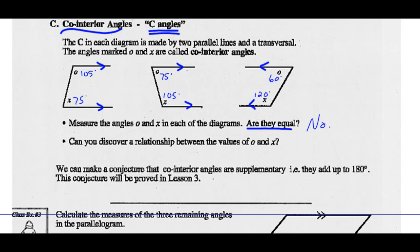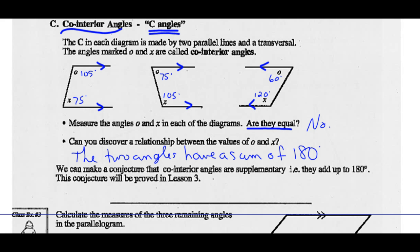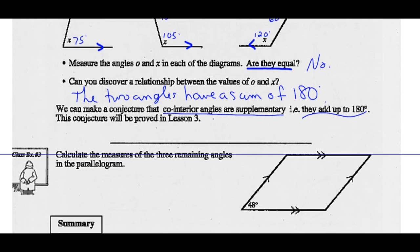Can you discover a relationship between the values of O and X? Looking closely, you should notice that the two angles have a sum of 180 degrees. So we make a conjecture that co-interior angles are supplementary — any time two angles add to 180, we call them supplementary. This conjecture will be proved a little later in Lesson 3.